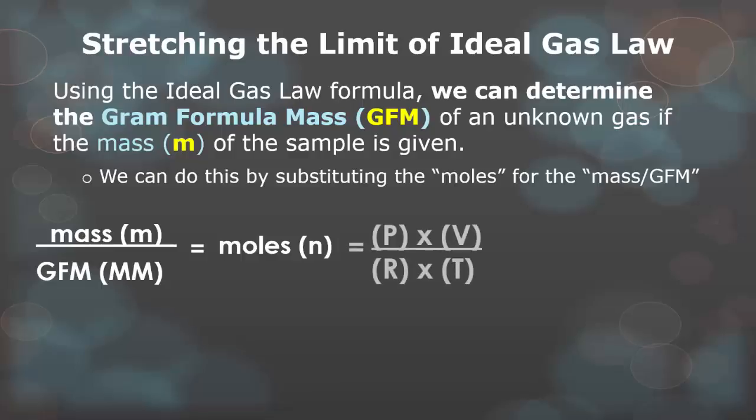Using the amount of moles, you can then put it into the modified PV equals NRT formula, and then that can be useful to then find pressure, volume, or temperature. Now notice, if you take your hand and you cover everything on the left before the word moles, it looks just like the formula that we used in the last video.